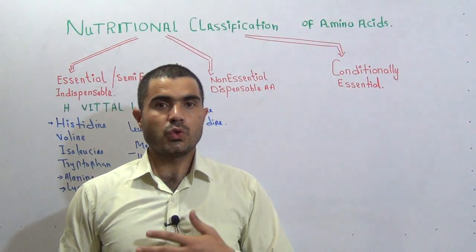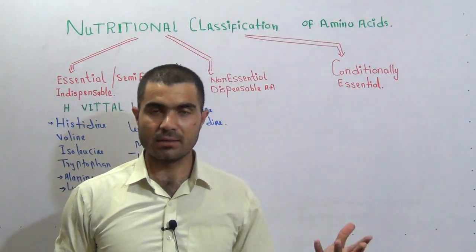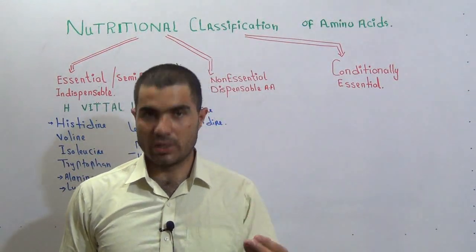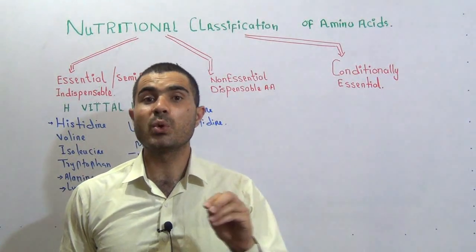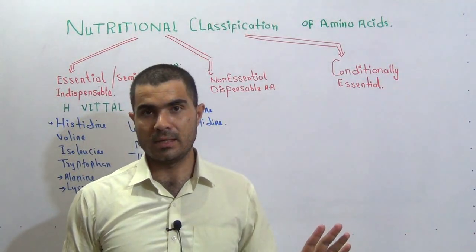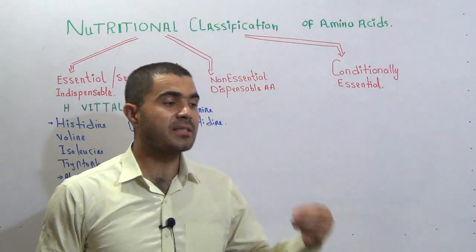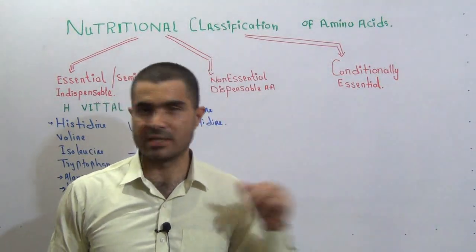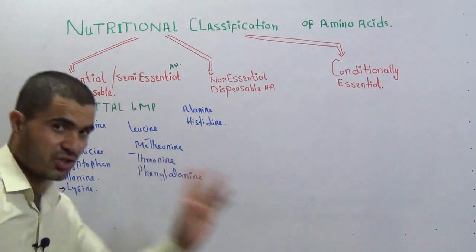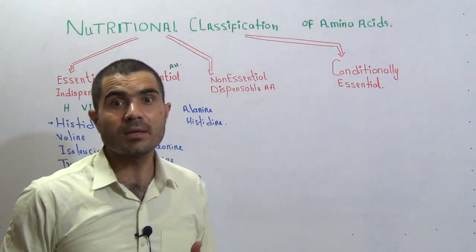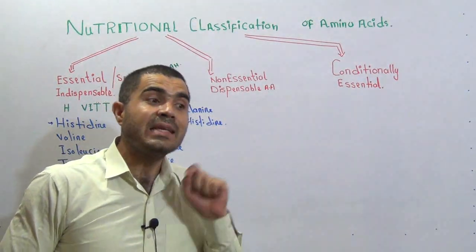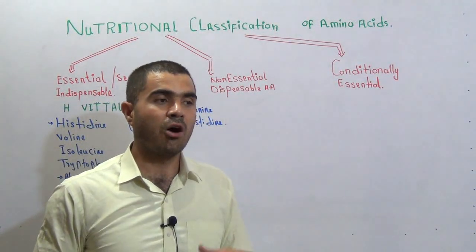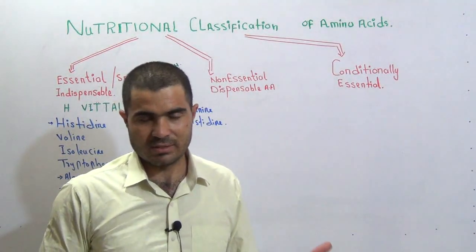If your body can synthesize certain amino acids, you don't need to take those from outside. But there are some amino acids among the 20 standard amino acids which our body cannot synthesize, so we need to take these from the diet. These amino acids are called essential amino acids — they are very important because your body cannot synthesize them, yet your body needs them. You cannot say that if your body cannot synthesize them, then maybe your body doesn't need them — that is not the proper way to think.